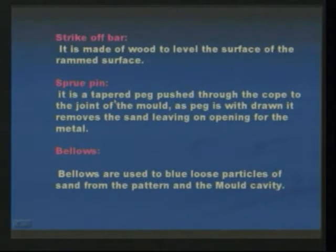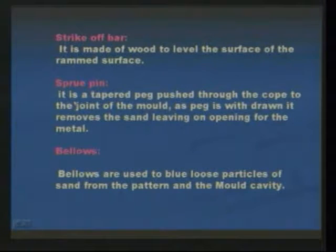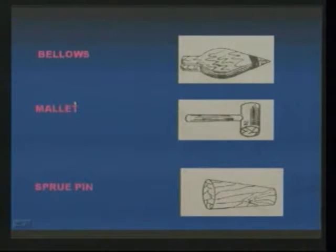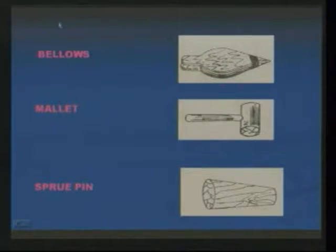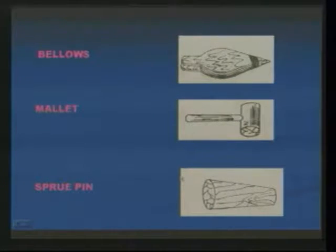Next one is a strike bar. It is made of wood to level the surface of the rammed surface. Next is the sprew pin — it is a tapered peg. The bellows is used to blow small sand particles over the surface of the finished mold cavity. The sprew pin is a rounded bar which is used for production of mold cavities.